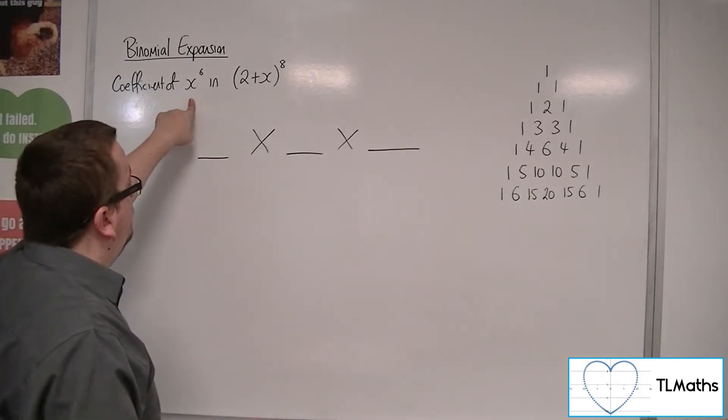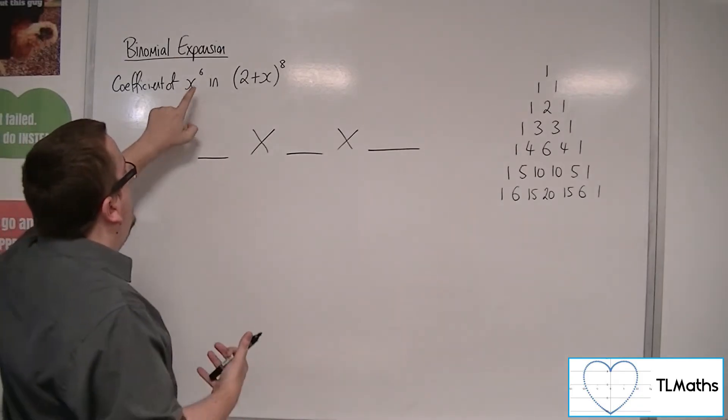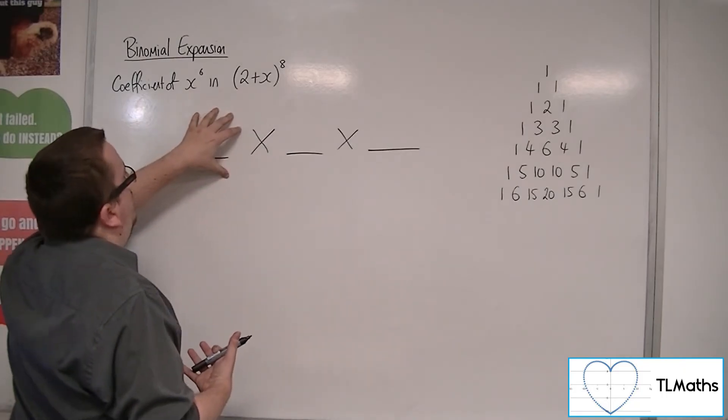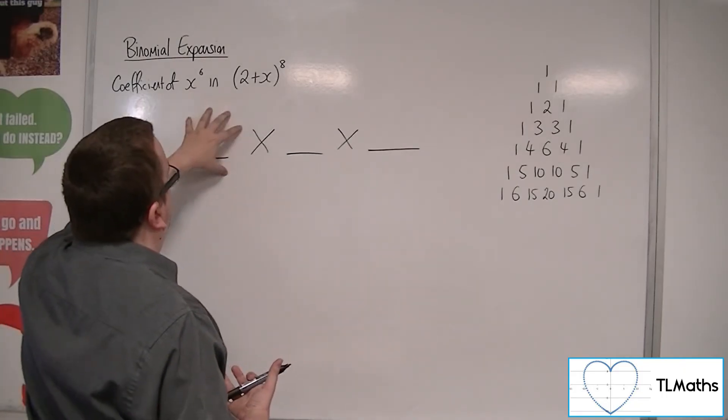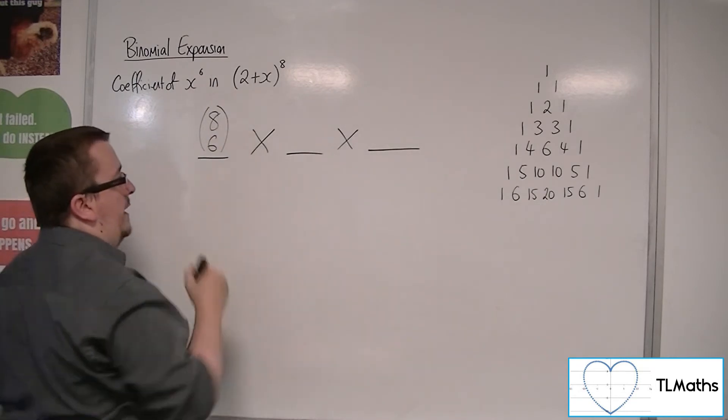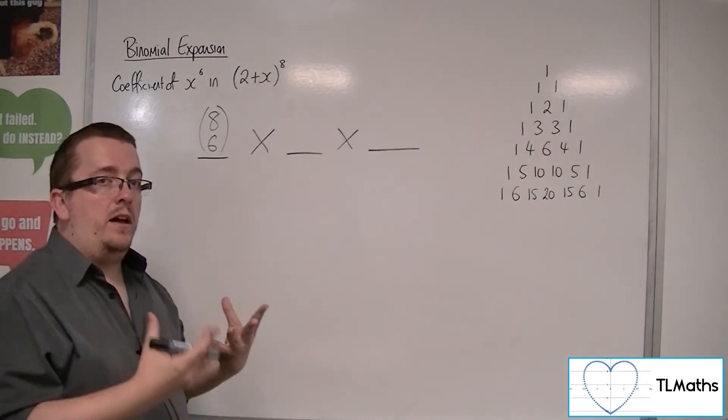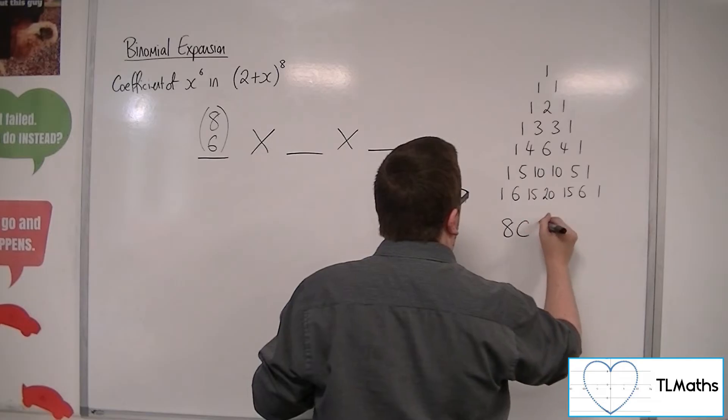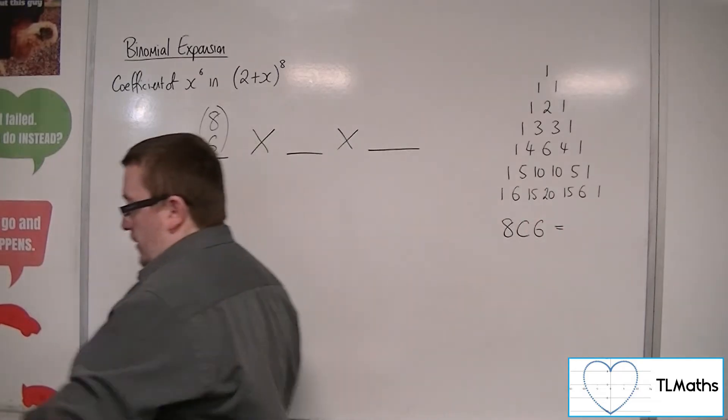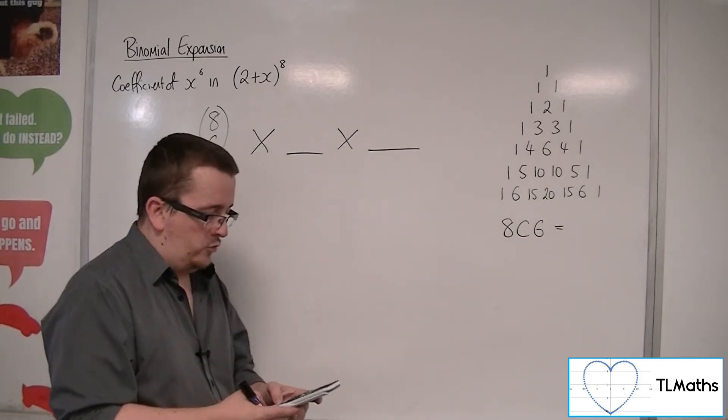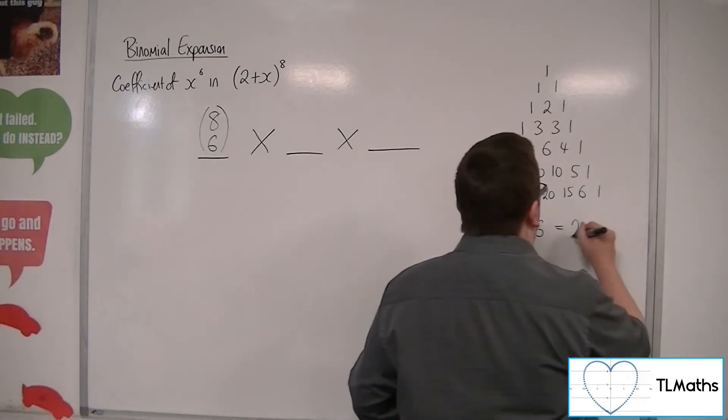So this value, the coefficient for Pascal's triangle in here, would be 8 choose 6. So 8 NCR 6, I can find on my calculator rather than having to write down Pascal's triangle, and that's 28.